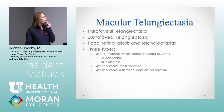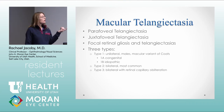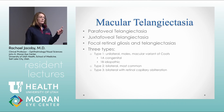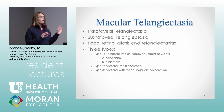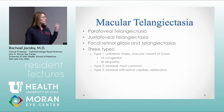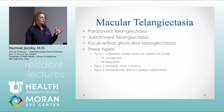Macular telangiectasia has three types. Type 1 is unilateral in males and is really thought to be a variant of Coat's disease — also called Leber's miliary aneurysms. Some people group Coat's into Type 1 macular telangiectasia, but the BCS separates the two. The key differentiating factor is that Coat's disease is in young boys, while Type 1 macular telangiectasia is seen in older patients. Type 2 is the most common.